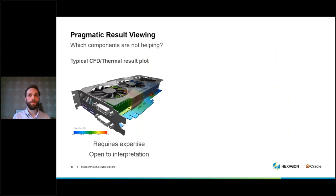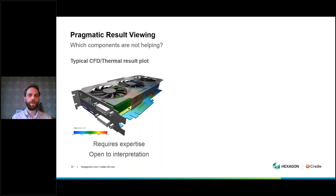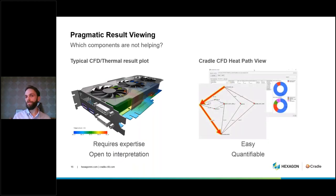Once we have solved the model and want to look at results, a standard fringe plot requires a lot of experience to understand how heat is moving — and it is open to interpretation. To address this, we developed the HeatPathView tool, which is easy and quantifiable. It clearly shows how heat travels from one part to another, allowing you to track heat dissipation and verify whether the system is working as intended.